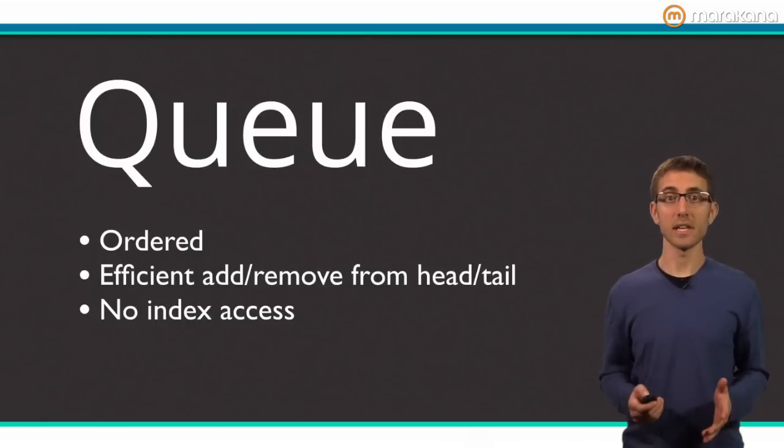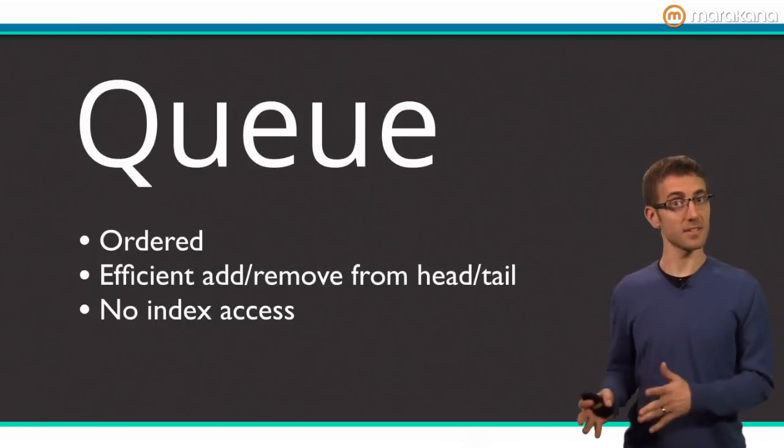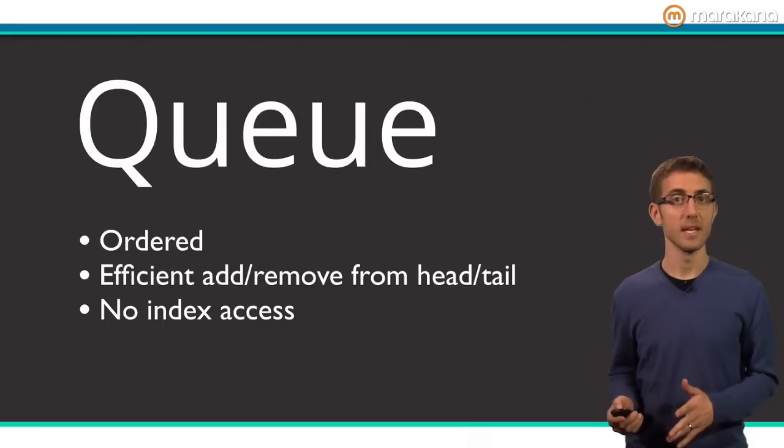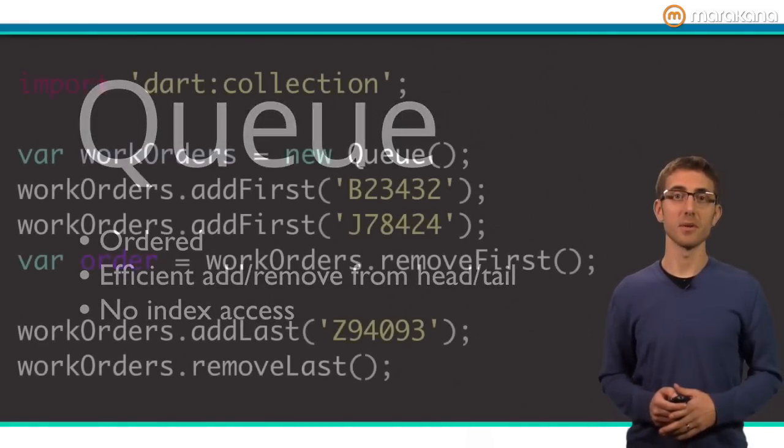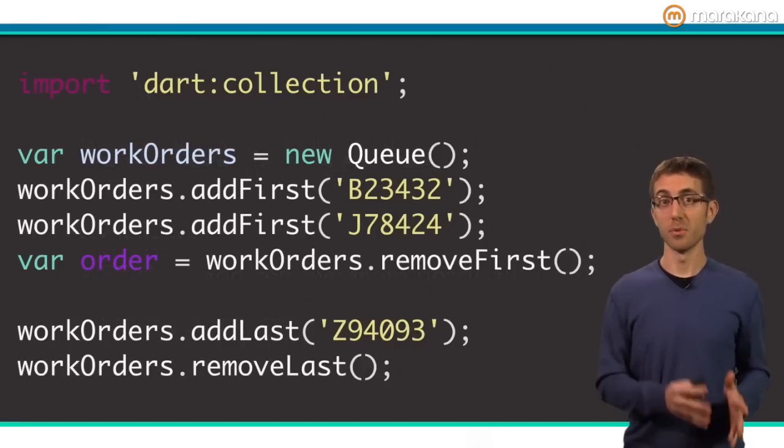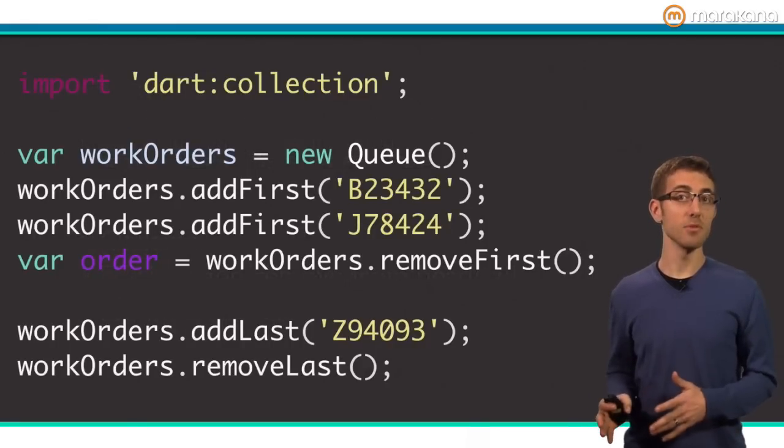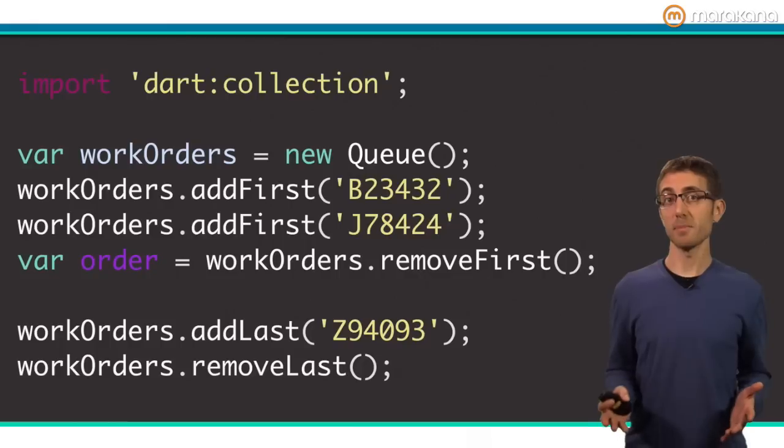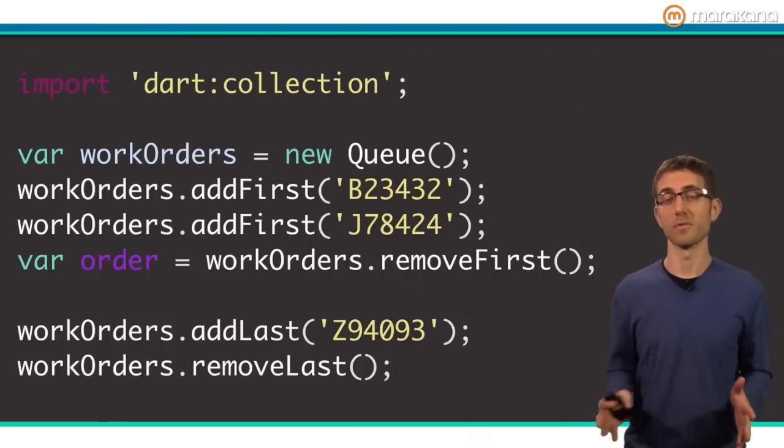A queue in Dart can be treated like a first-in-first-out or last-in-first-out data structure. Here is some example code that uses a queue. Notice the add first, remove first, and add last, remove last methods. A queue is efficient because it doesn't allocate a whole new data structure when new items are added or removed from the head or tail.